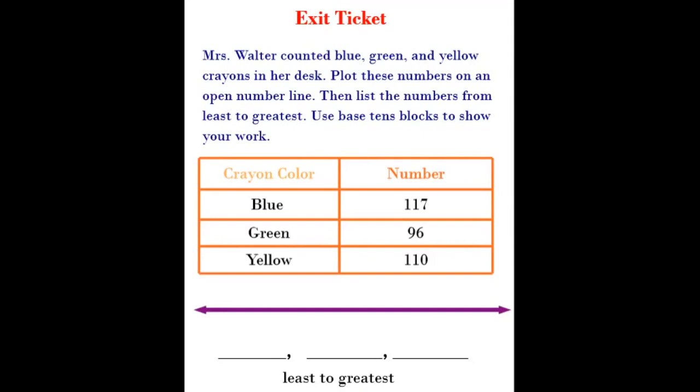We are going to end this lesson with the exit ticket below. It says, Mrs. Walter counted blue, green, and yellow crayons in her desk. Plot these numbers on an open number line, then list the numbers from least to greatest. Use base ten blocks to show your work. Thank you for watching the video lesson, and I'll see you in the next video.